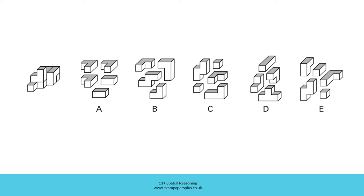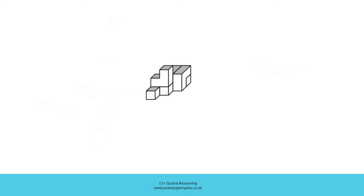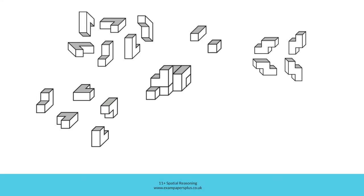In order to answer this question accurately, let's take a closer look at the figure and think about how it may have been constructed. Of course, there are several different ways that this figure might have been constructed. Here are some of the blocks which may have been used. Firstly, as you can see, this is clearly an L-shaped block.